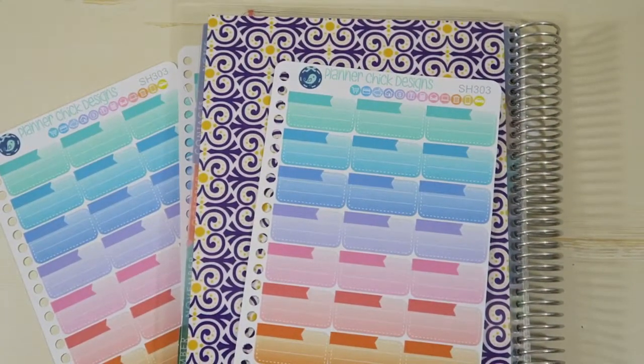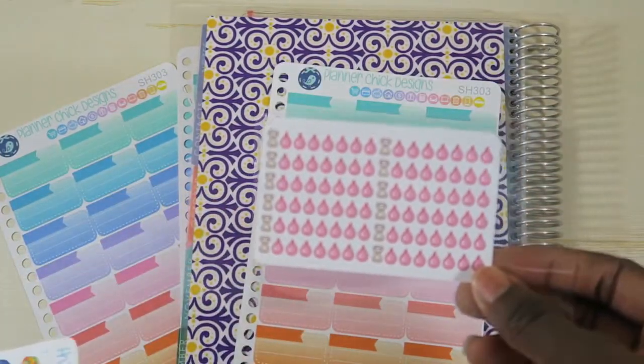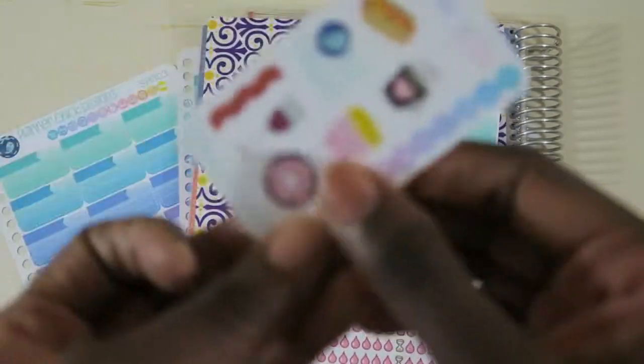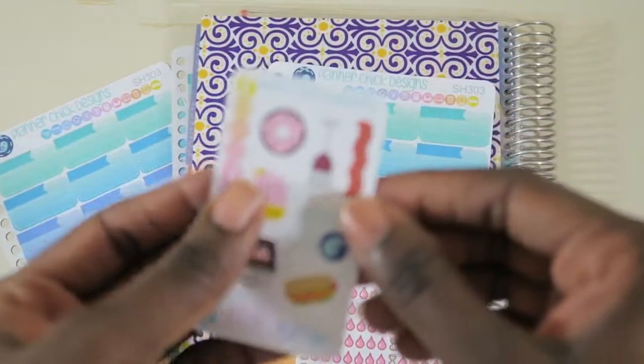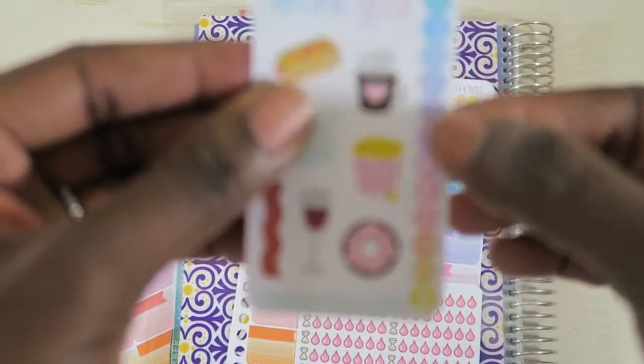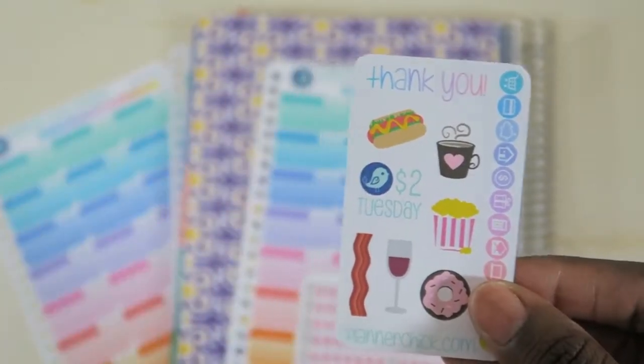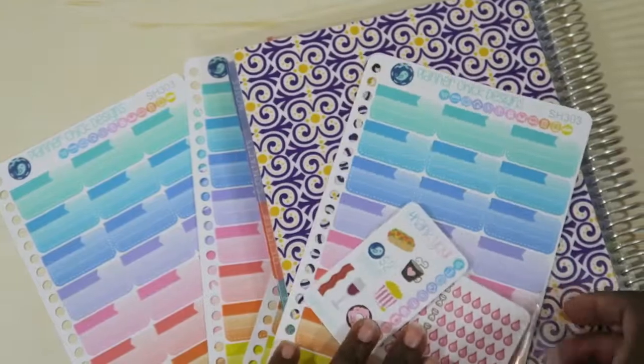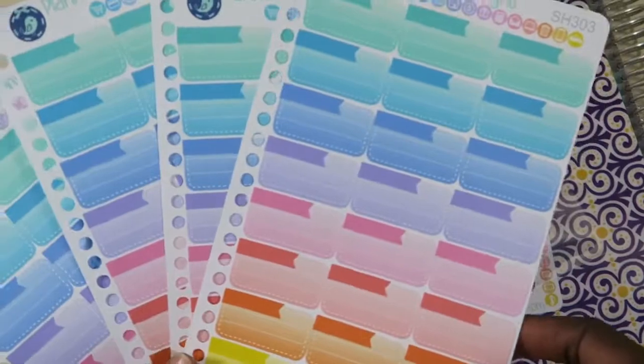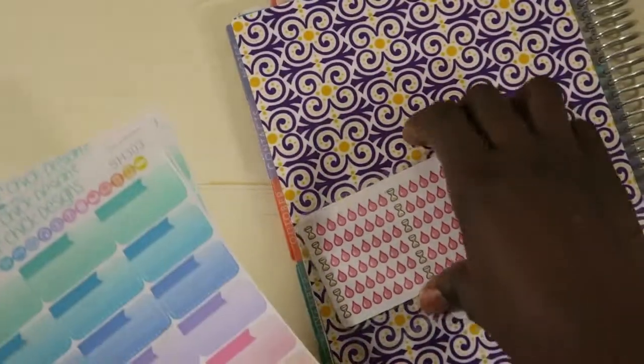These could fit right in the inside pocket of the Erin Condren notebook if you wanted to, which is cool. I also ordered these period trackers—I know, TMI, but maybe it's not as bad if you have a cute sticker to track it with. Then I got these free little sets here, very cute. It has the icons here and then all of these. These were each two dollars and then this was one dollar, so altogether it was like eleven dollars.